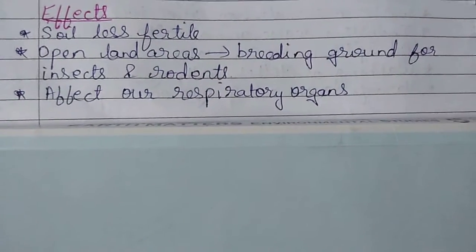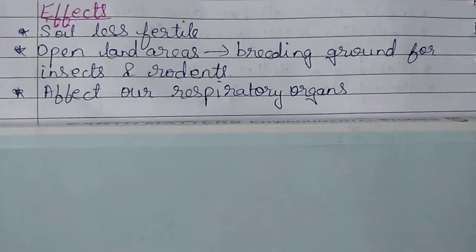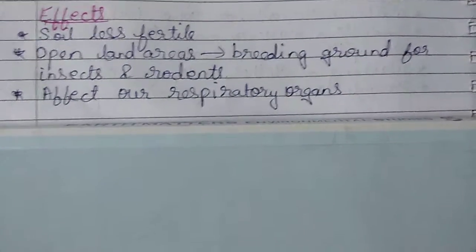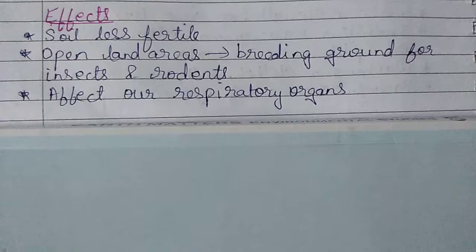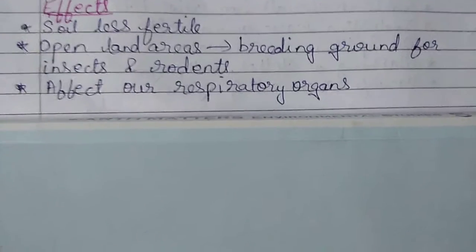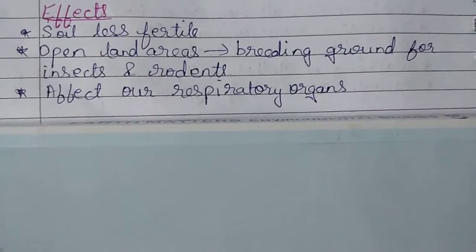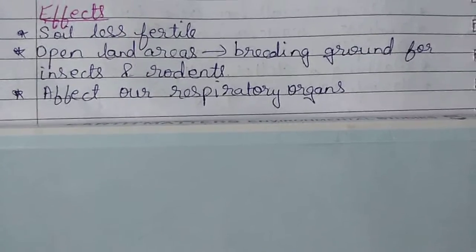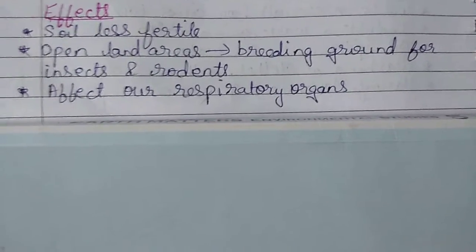We also discussed the causes of land pollution. Some of the causes are deforestation — that is cutting down of large amounts of trees in a particular area — then releasing chemicals from factories into the soil, and also digging out minerals from the soil. All these causes lead to land pollution.